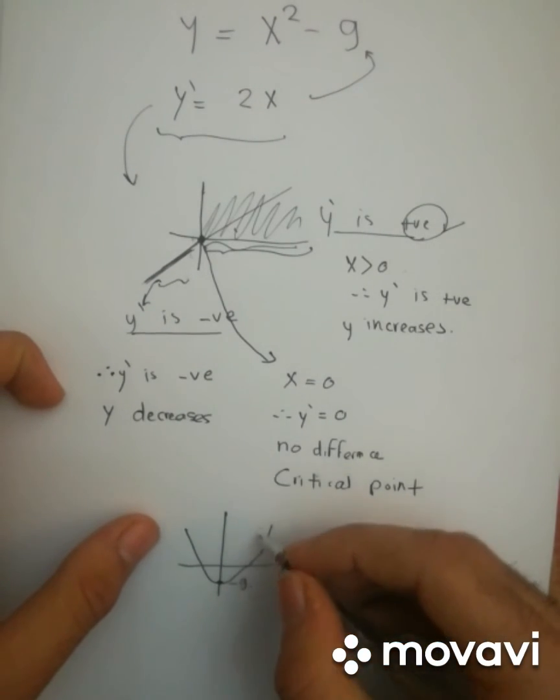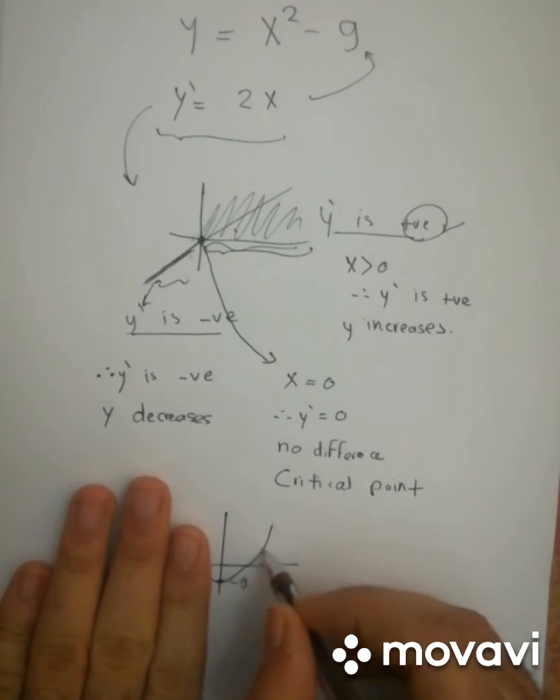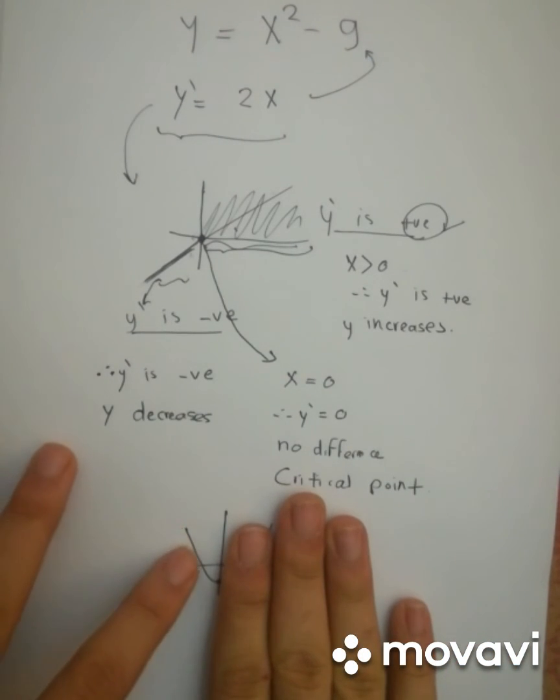And so the function here, as we've said, when x is greater than 0, it's increasing. Now look here, there is an increase. And when it is less than 0, the value is decreasing.